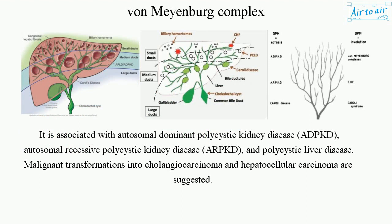Von Meyenberg Complex is associated with autosomal dominant polycystic kidney disease (ADPKD), autosomal recessive polycystic kidney disease (ARPKD), and polycystic liver disease.